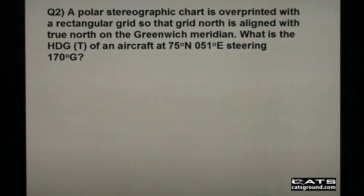Grid navigation question 2. A polar stereographic chart is overprinted with a rectangular grid so that grid north is aligned with true north on the Greenwich Meridian. What is the heading true of an aircraft at 75 degrees north, 051 east, steering 170 degrees grid?